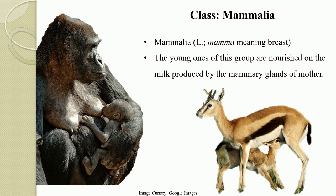The word Mammalia comes from the Latin word 'mamma' meaning breast. The most characteristic feature of all mammals is the presence of the mammary gland in the female, which is useful for providing nourishment to the young ones. The young ones of all mammals are nourished on milk produced by the mammary glands of the mother. Here you can see a female deer giving nourishment to her cub via the mammary gland, which is responsible for producing milk.